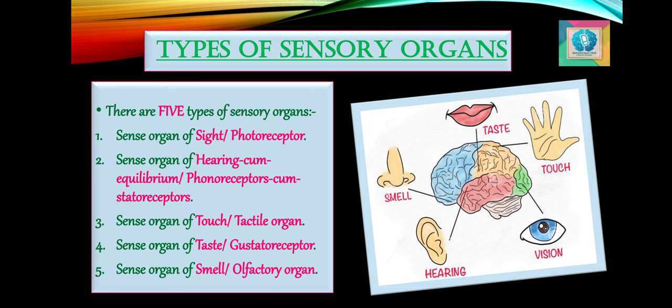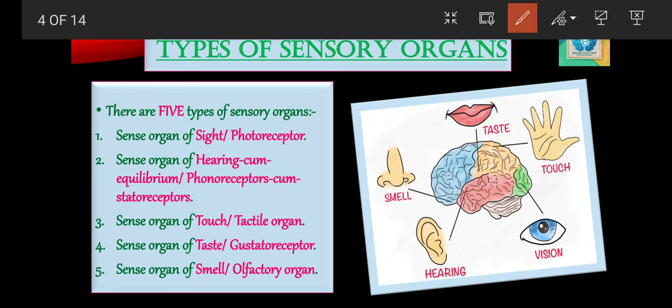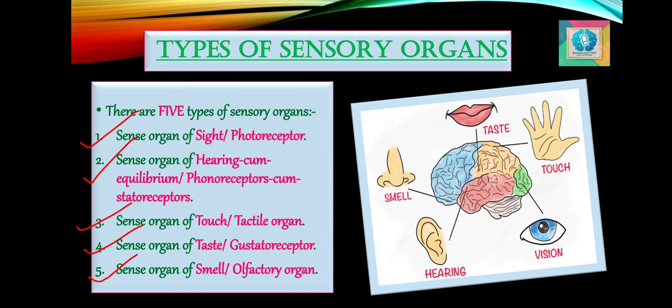The five types of sensory organs are: first, the sense organ of sight, also called a photoreceptor; second, the sense organ of hearing cum equilibrium, also termed as phonoreceptor cum statoreceptor; third, the sense organ of touch or tactile organ; fourth, the sense organ of taste, also called gustatory receptor; and last, the sense organ of smell, also called the olfactory organ. Let's discuss these five types one by one in detail.